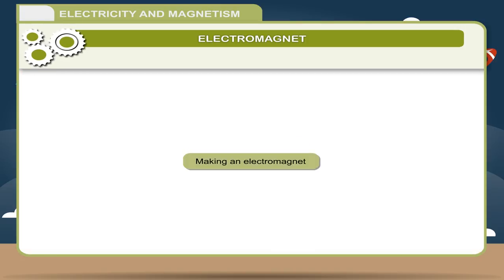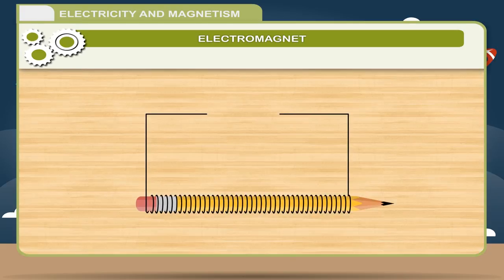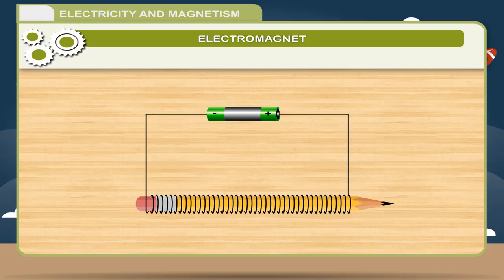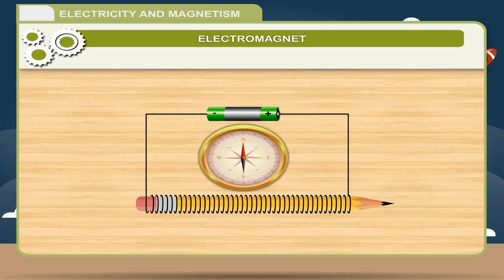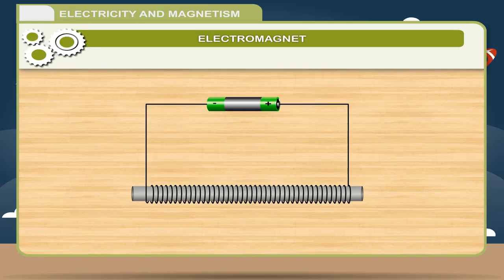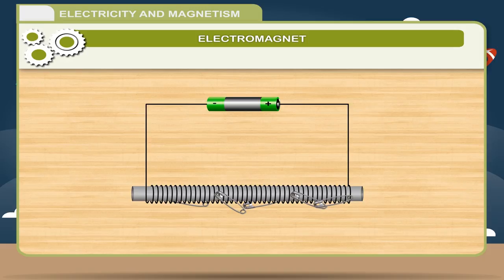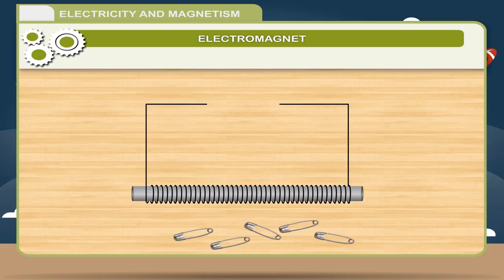Activity — Making an electromagnet: Wind the wire tightly and uniformly around the pencil. Connect both ends of the battery to the wire. This electromagnet will be strong enough to affect a compass needle, but too weak to attract anything. Replace the pencil with an iron nail. Now you will have an electromagnet strong enough to attract safety pins. Result: The iron nail behaves like an electromagnet; it is called the core of the electromagnet. It will lose its magnetism if the current is turned off.